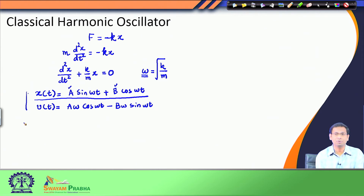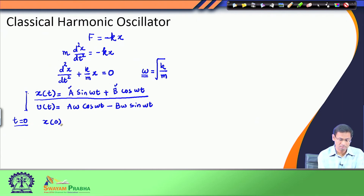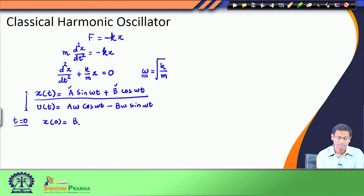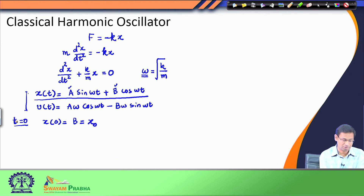Now I have to discuss the boundary condition — the initial value condition. At time t equals 0, when I put t equals 0 in the position equation, this term becomes sin(0) which is 0, and cos(0) equals 1. Therefore x(0), the position at time equals 0, is the value of b. I define that as x₀, the equilibrium or starting position of the oscillator. So I already have an idea about the value of b — b is the initial position x₀.